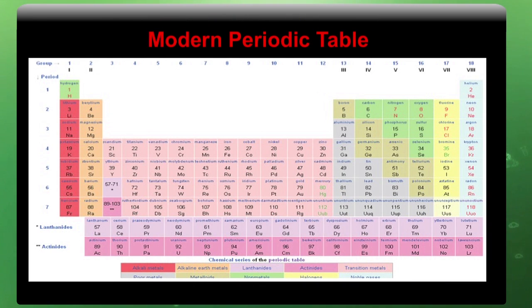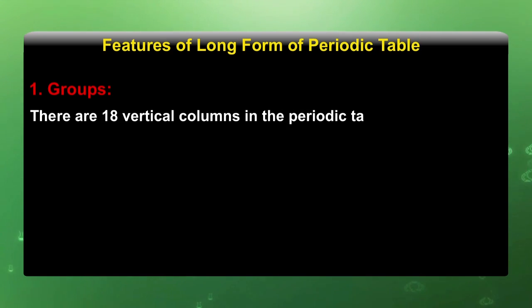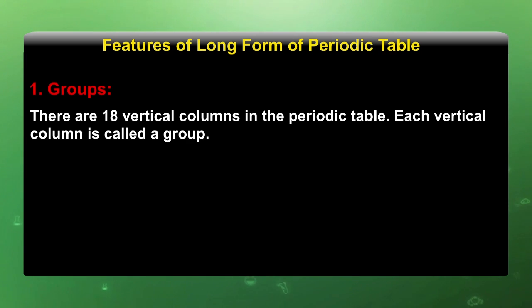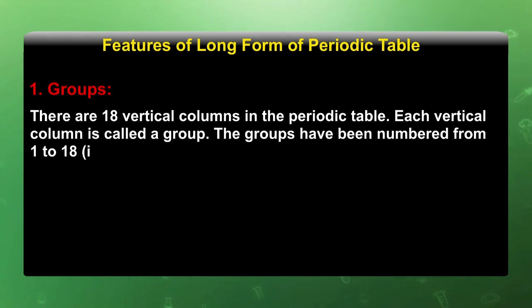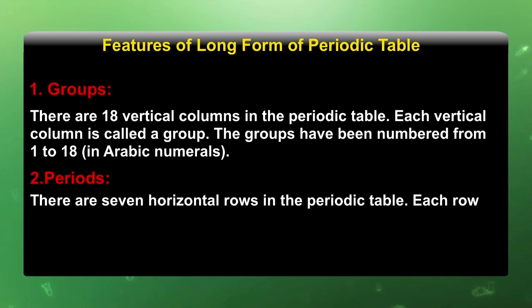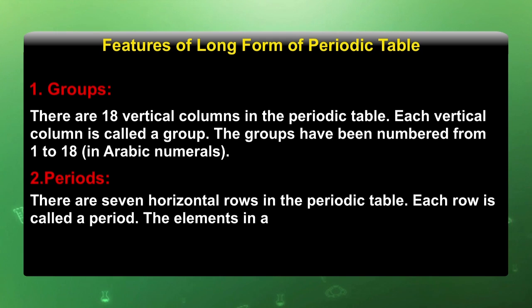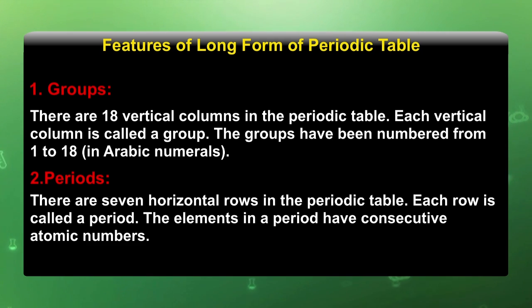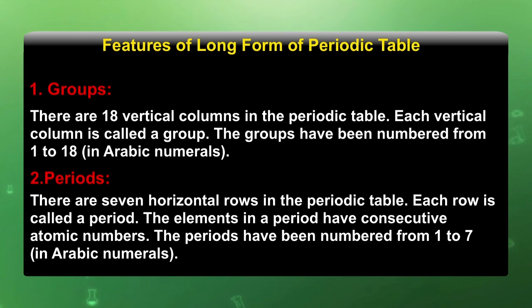This is the long form of periodic table which indicates all the elements, with a total number of 7 periods and 18 groups represented here. There are 18 vertical columns in the periodic table; each vertical column is called a group. The groups have been numbered from 1 to 18 in Arabic numerals. There are 7 horizontal rows in the periodic table; each row is called a period. The elements in a period have consecutive atomic numbers, and the periods have been numbered from 1 to 7 in Arabic numerals.